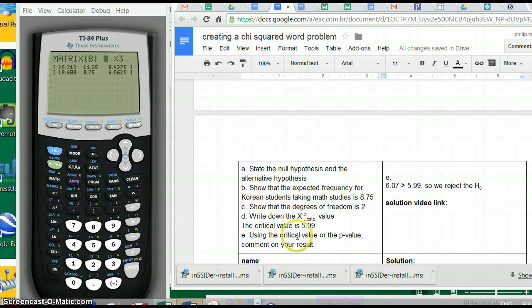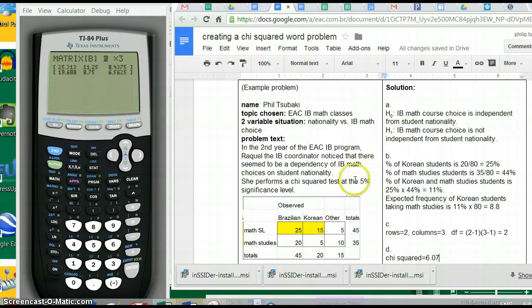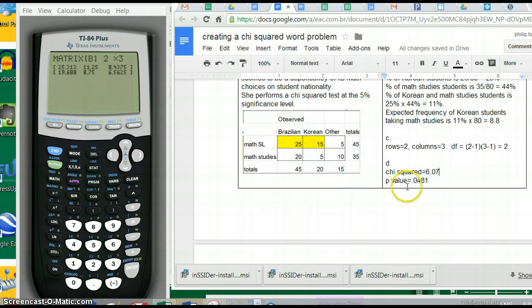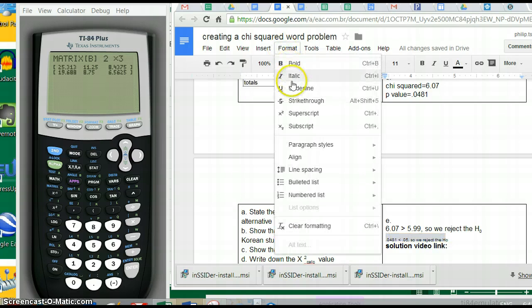What about for the p-value? The p-value is 0.0481. Remember that the significance level is 5%, so the question is, is 0.0481 less than 5%? And it is, slightly. 0.0481 is less than 0.05, which is 5%. Remember, you have to put 0.05, so we reject the null hypothesis also. And that is the explanation.